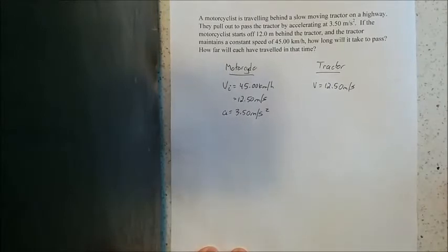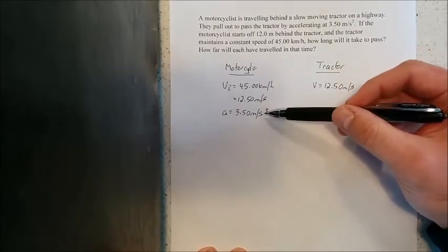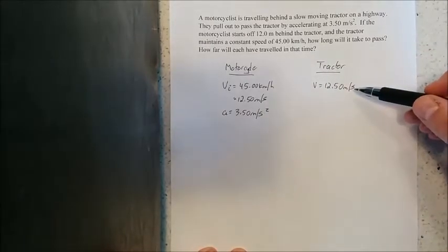So now we run into a kind of stalemate at this point because we have information for the motorcycle - initial speed and acceleration - and information for the tractor. That's really it.